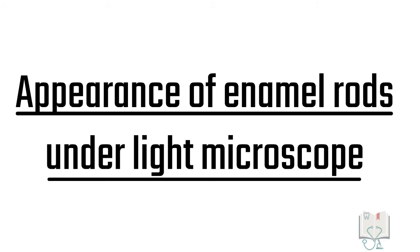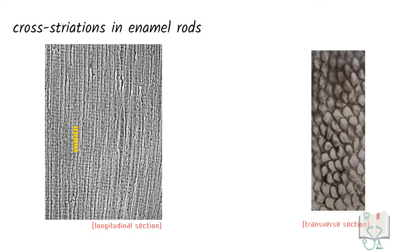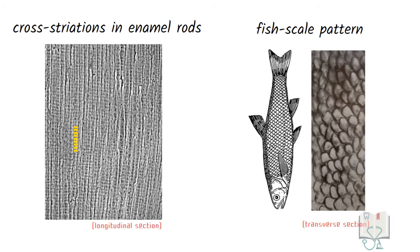Now let us see the appearance of enamel rods. In longitudinal section, the enamel rods show cross-striations, i.e. appearance of light and dark bands as they are deposited incrementally. However, in transverse section, enamel gives the characteristic picture of fish scale appearance.